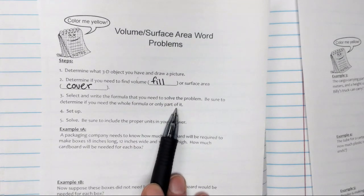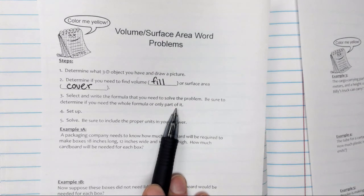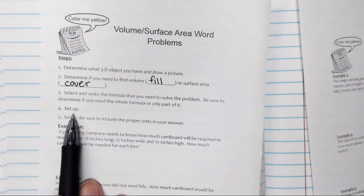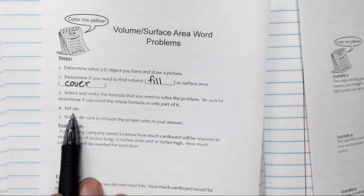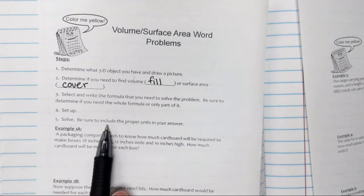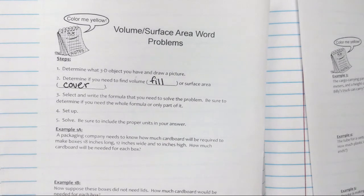Sometimes we'll have to modify our formulas in order to fit the information that we're trying to find. Step four is to set up your equation, and step five is to solve. Be sure to include the proper units in your answer.